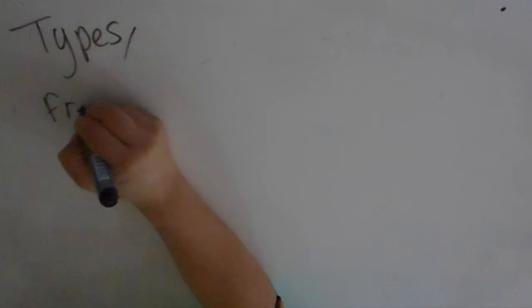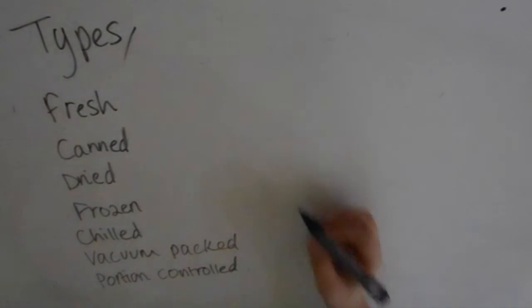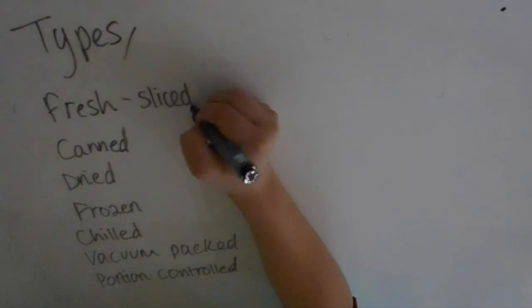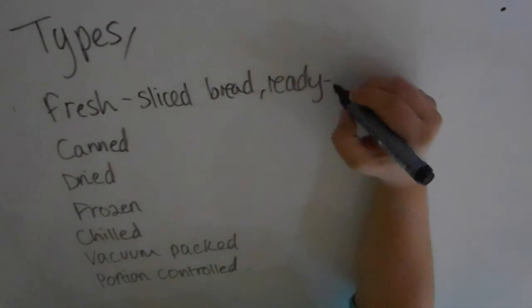You can get fresh convenience products, canned, dried, frozen, chilled, vacuum packed, and portion controlled convenience products. Lots of people get this confused because they forget about fresh convenience products. These are things like sliced bread and ready-made cakes. They've been completely processed but are still fresh products. Your cakes could be a gateau you're serving as a dessert - lots of catering establishments use fresh desserts as part of their menu.